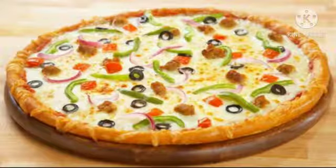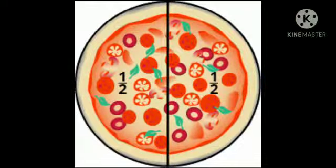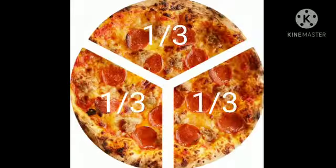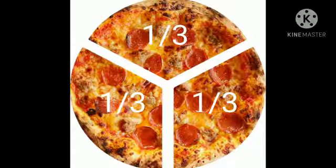Now suppose if I have invited only one of my friends. Then I will cut this pizza into two equal parts. Each part is called one half. It is denoted by one upon two. Why am I writing two here? Because I have cut this pizza into two equal parts. Here, one upon two means one part out of two equal parts.